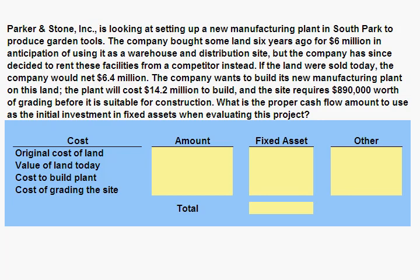Parker & Stone, Inc. is looking at setting up a new manufacturing plant in South Park to produce garden tools. The company bought some land six years ago for $6 million in anticipation of using it as a warehouse and distribution site, but the company has since decided to rent these facilities from a competitor instead.